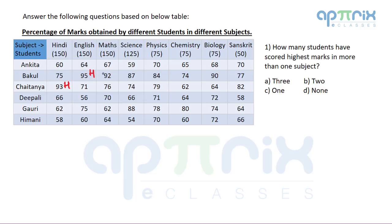In English, Bakul is highest. In Math, Bakul is again highest. Going through the remaining columns: the highest values are 84, 80, 90, and 82 respectively. Looking at who appears as highest in more than one subject, it is Gauri, Chaitanya, and Bakul. So the answer is 3 students.